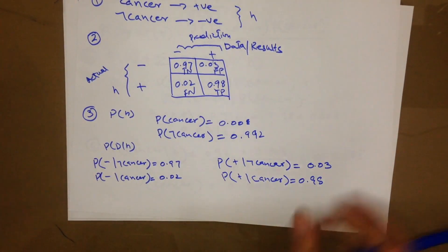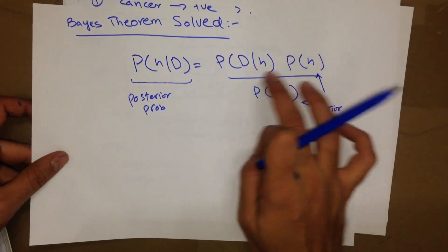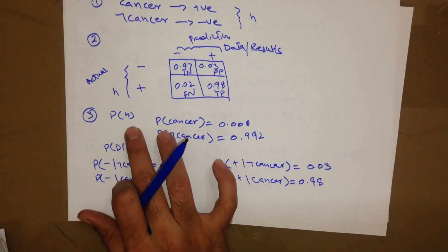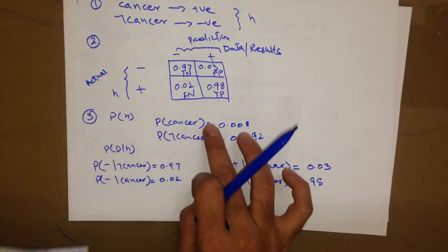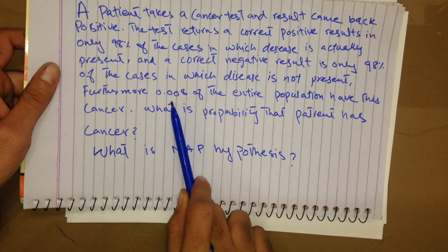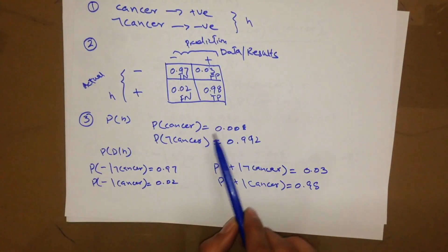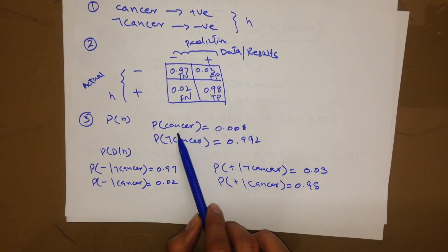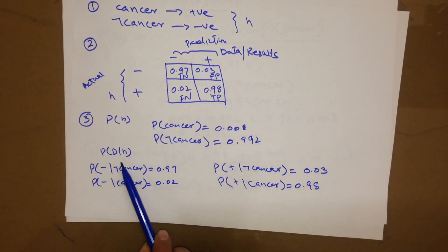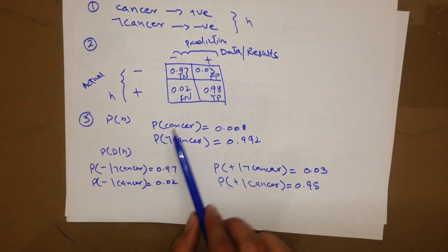As per the formula we need to find out P(H), P(D|H), and P(D). P(H) is basically the probability of cancer and the probability of not cancer. It is given that 0.008 of the entire population has this cancer, so 0.008 is the probability of cancer, and the probability of not cancer is 0.992.